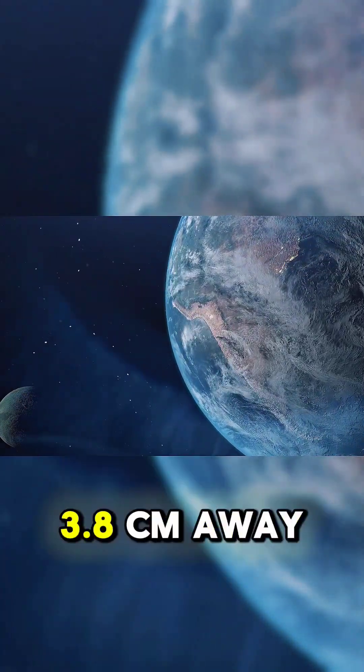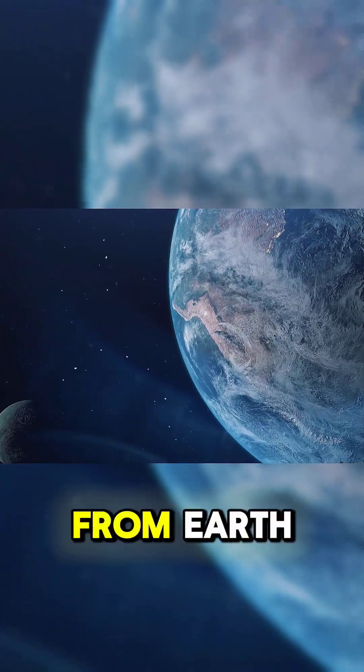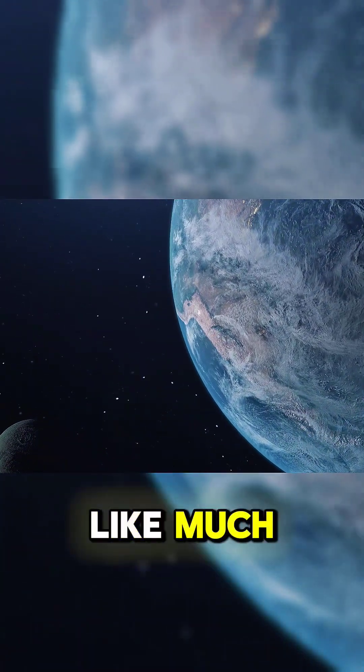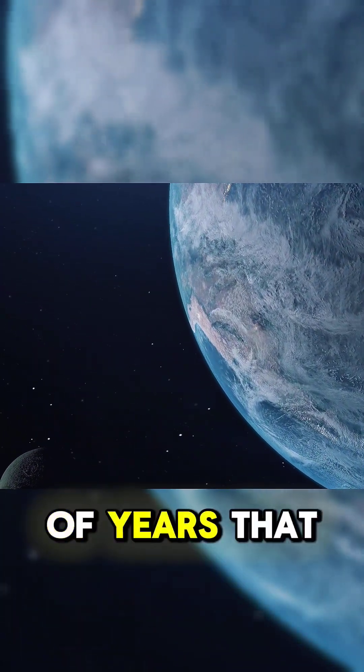Every year, the Moon drifts about 3.8 centimeters away from Earth. It doesn't sound like much, but over millions of years, that adds up.